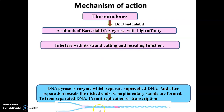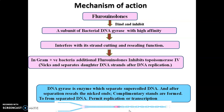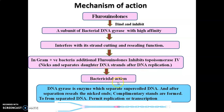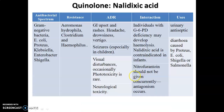Fluoroquinolones bind and inhibit the bacterial DNA gyrase subunit, interfering with the strand cutting and resealing function. DNA gyrase helps cut and seal the ends of bacterial DNA. In gram-positive bacteria, fluoroquinolones also inhibit topoisomerase 4, which nicks and separates daughter DNA strands after DNA replication. By inhibiting both enzymes, we get bactericidal action.